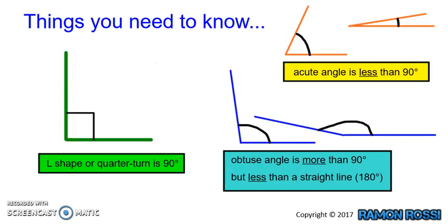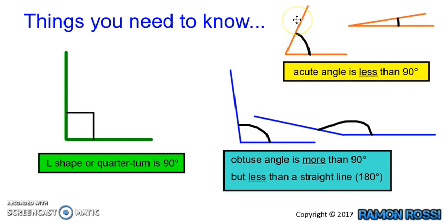Things we need to know for this lesson: if you don't already understand angles, you need to watch the video about understanding angles — the basics. We need to know that an L-shape or a quarter turn is 90 degrees, or a right angle. An acute angle is less than 90 degrees. An obtuse angle is more than 90 degrees but less than a straight line, which is 180 degrees.